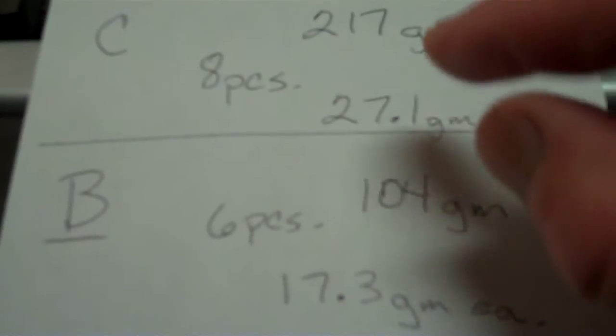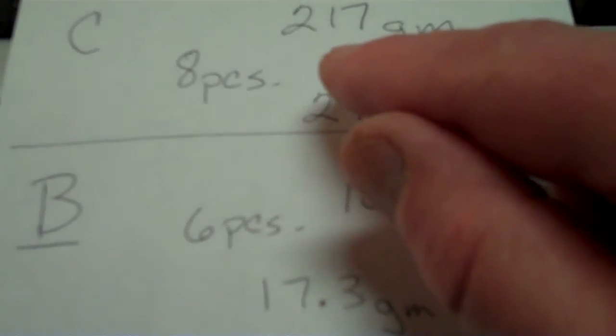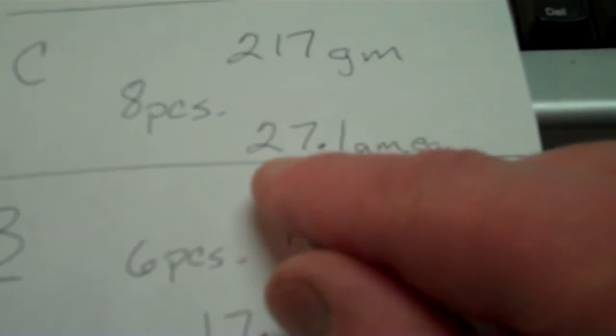Lot C was the larger candle holders. And there again, all this is the weighted stuff. 217 grams, 8 pieces, so divided by 8, 27.1 grams each.